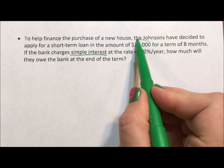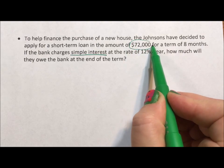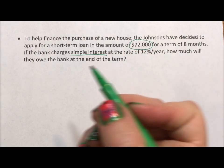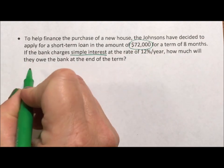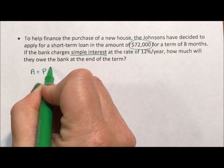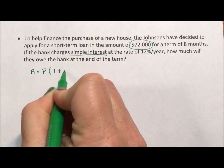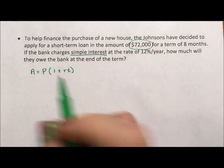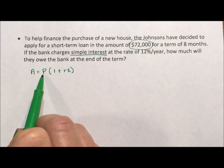Okay, so obviously they're going to owe the $72,000, but they're also going to owe the interest. So I am going to use the equation A = P(1 + rt). P is the principal of investment.